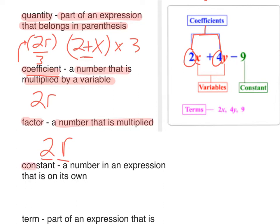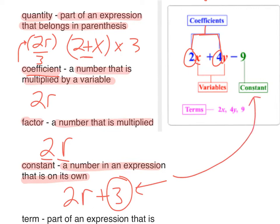Next word, constant. This is one you haven't heard before. It's a number in an expression that is on its own. So, in an expression like 2r plus 3, the number that's on its own is the 3. That's the constant. In the diagram up above, the constant is the 9. It's a number all by itself in an expression.